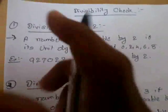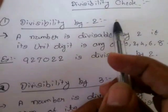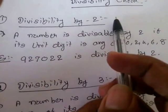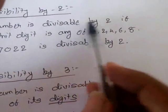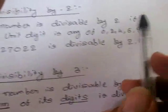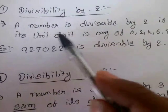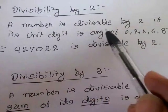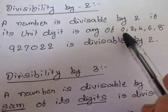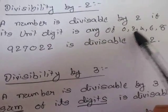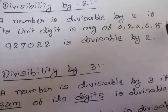The first rule is to check the divisibility by 2. The rule says a number is divisible by 2 if its unit digit is any of 0, 2, 4, 6, or 8.